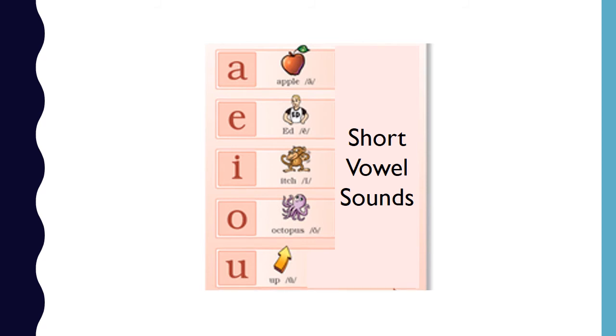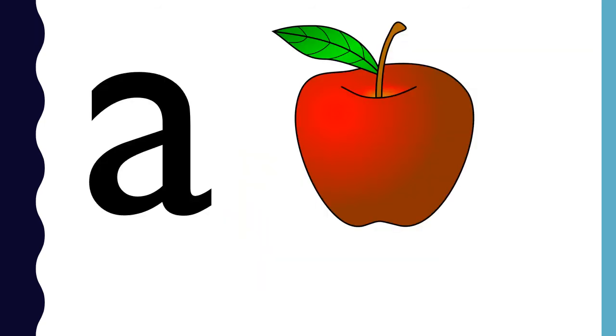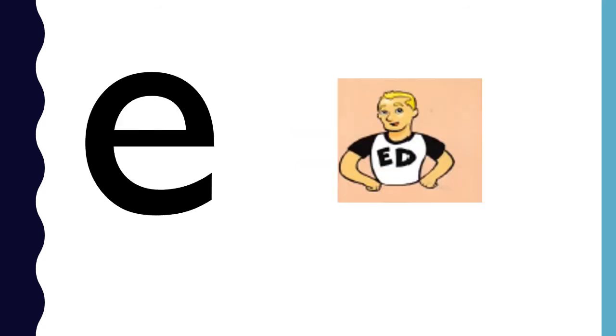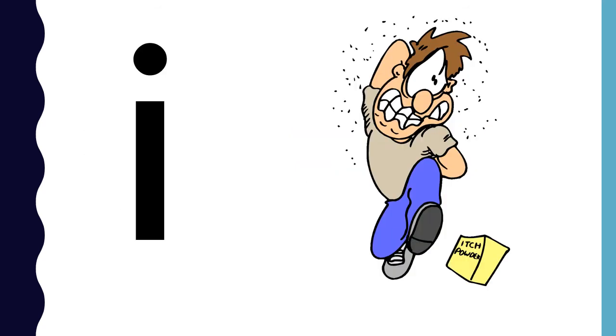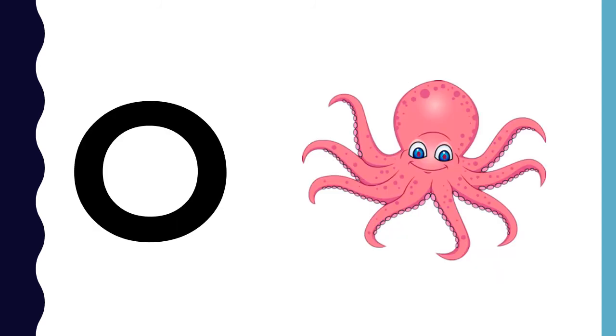Let's review the short vowel sounds. A, apple, A. E, ed, E. I, itch, I. O, octopus, O. U, up, U.